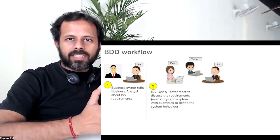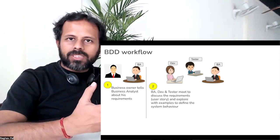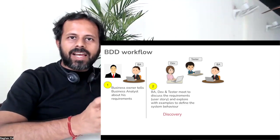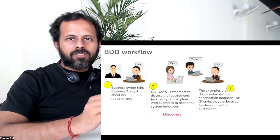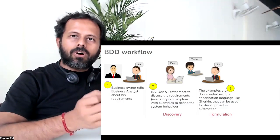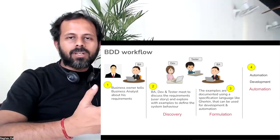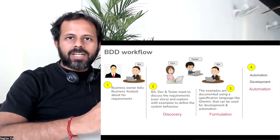This is also called the three amigos meeting in BDD, because we have representatives from these three teams. In this meeting, they discuss the use cases, user stories, and requirements. They create a common understanding, ask all the questions required, and finally they create documentation where they write these scenarios or use cases in the form of feature files using given, when, and then keywords. This document becomes a single source of truth for all the teams — business, dev, and QA — so everyone has a common understanding.